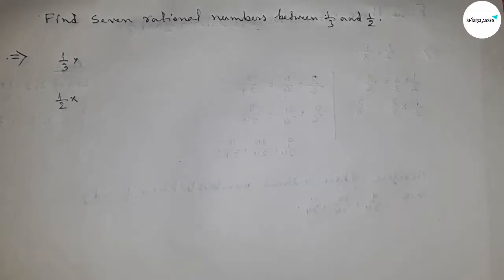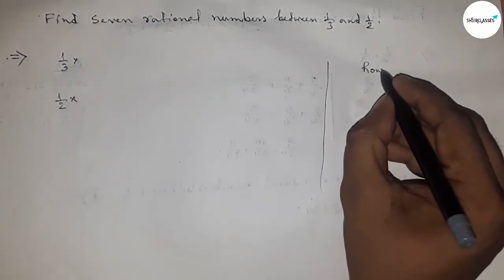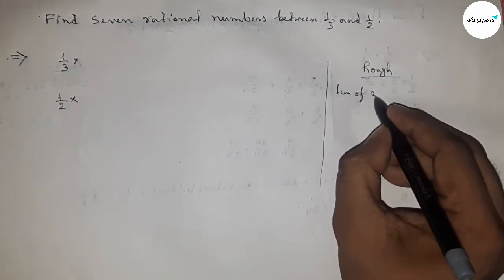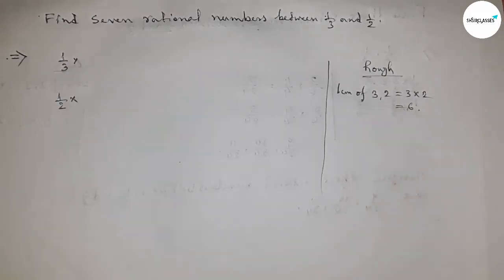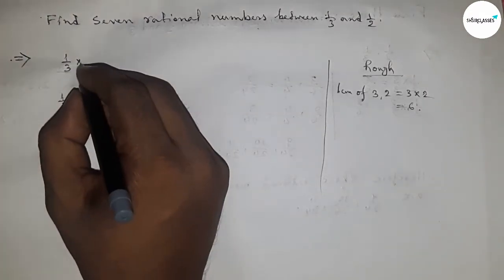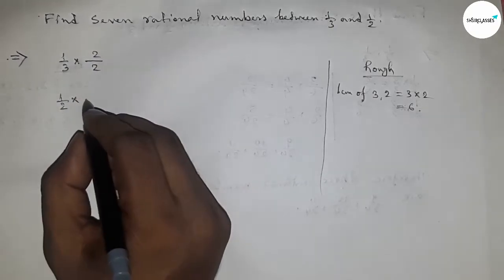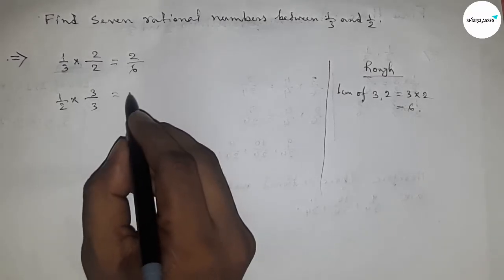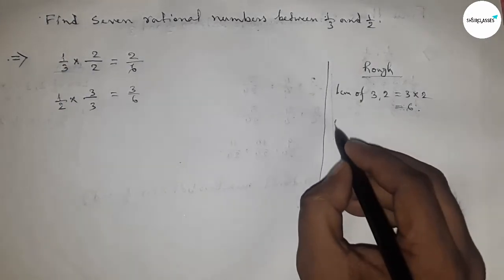First we have to find out the LCM of 2 and 3, and the LCM of 2 and 3 equals 6. So we have to make the denominator of both rational numbers to 6. If we multiply by 2 here and by 3 here, we get 2 by 6 and 3 upon 6. So the denominators are equal.